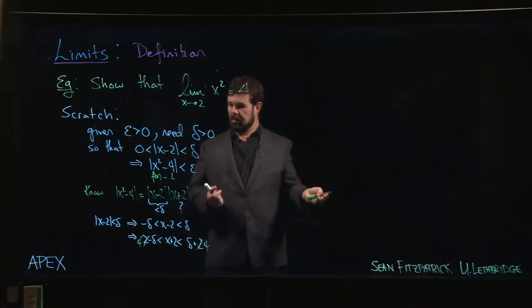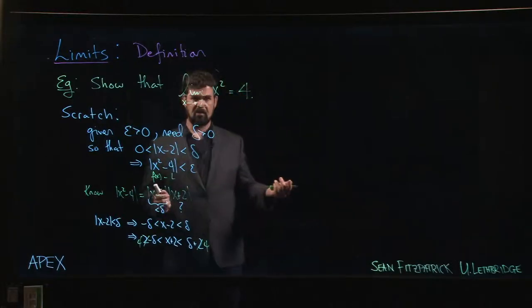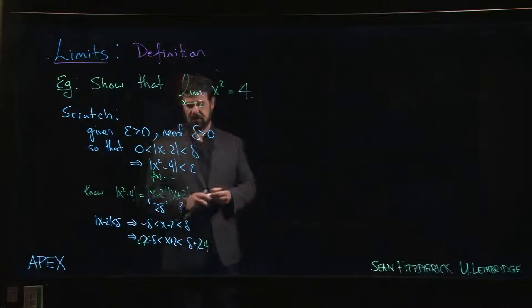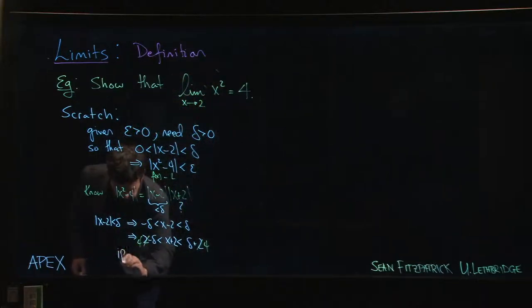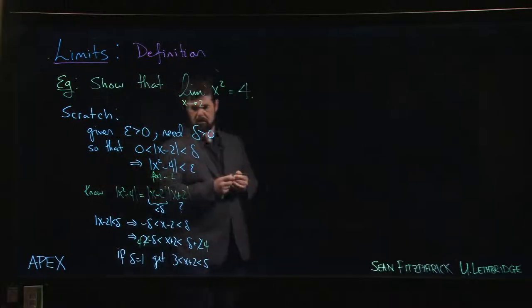And so now we say, okay, we can make delta, you know, as small as we want. So in particular, we could at least make it smaller than 1. So we can say, if delta is equal to 1, we get that x + 2 is between 3 and 5.